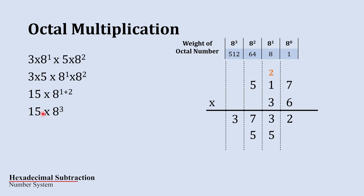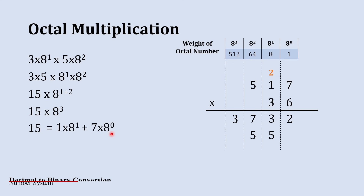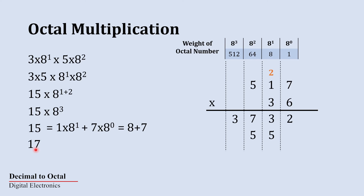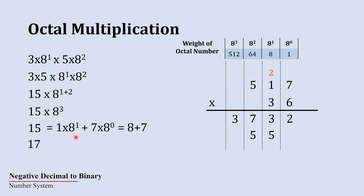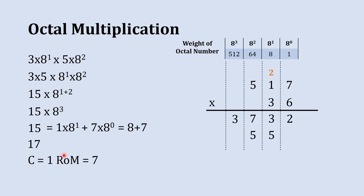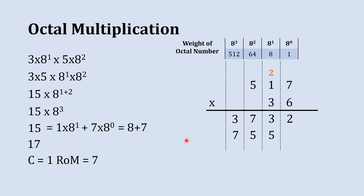Now 3 into 5 gives us 15, and the multiplication of their weights is 8 raise to 3. Since 15 is greater than 8, we convert it to octal: 1 into 8 plus 7 into 1 gives us 8 plus 7, which is 15. So 17 is the octal equivalent to decimal 15. Here, 1 will be forwarded as carry to the next column and 7 will be the result of multiplication, written at the 8 raise to 3's place. The carry is written directly in the next column. Now these two are partial multiplication results.